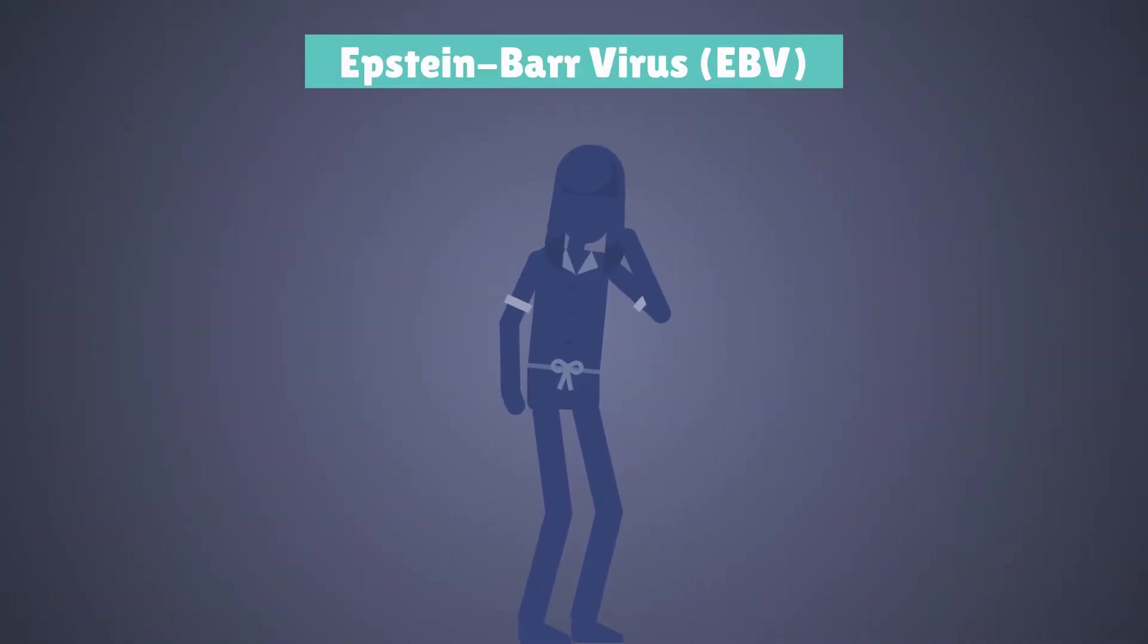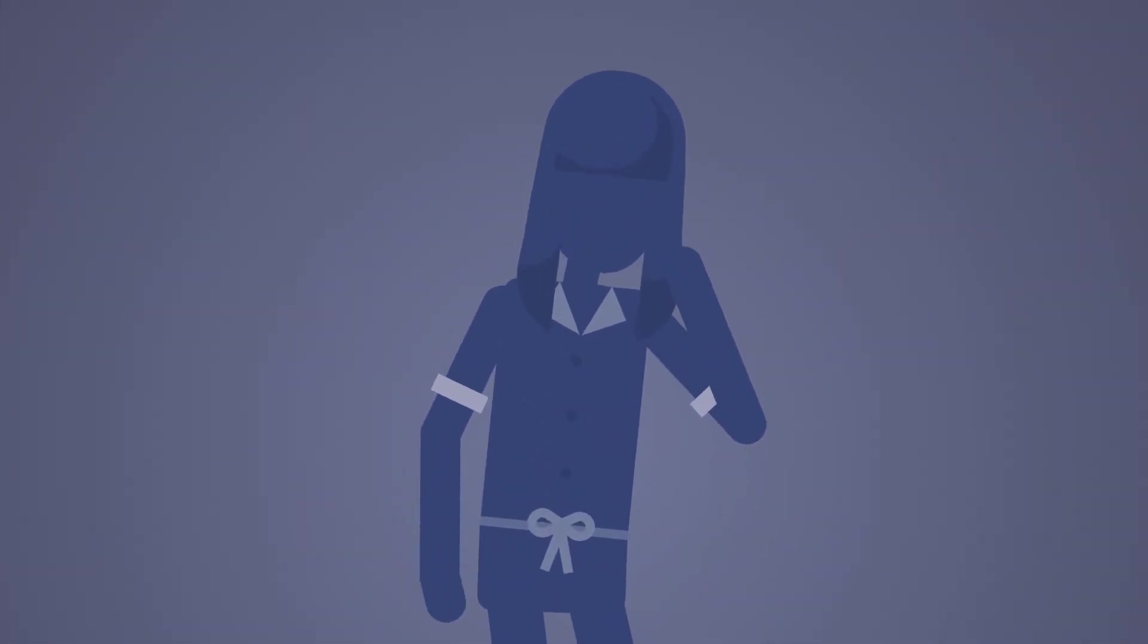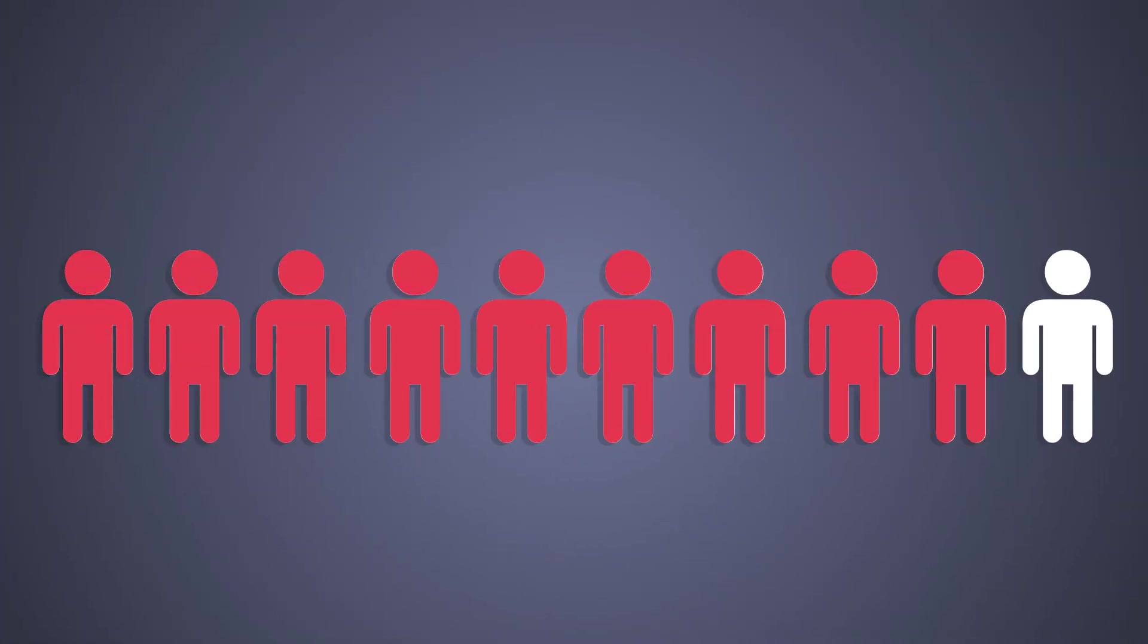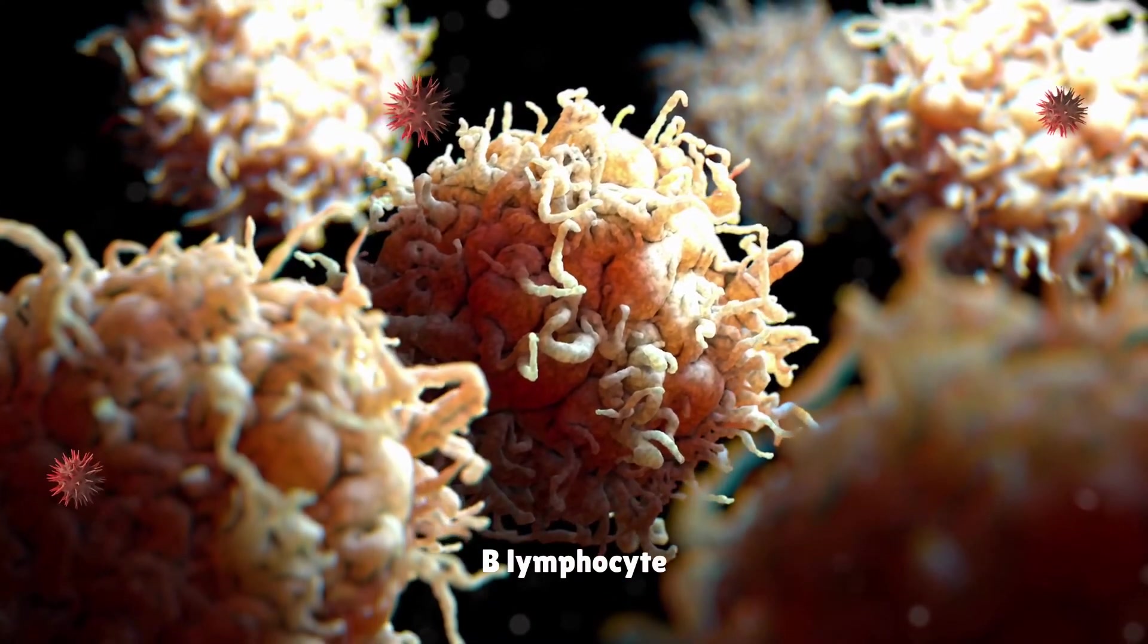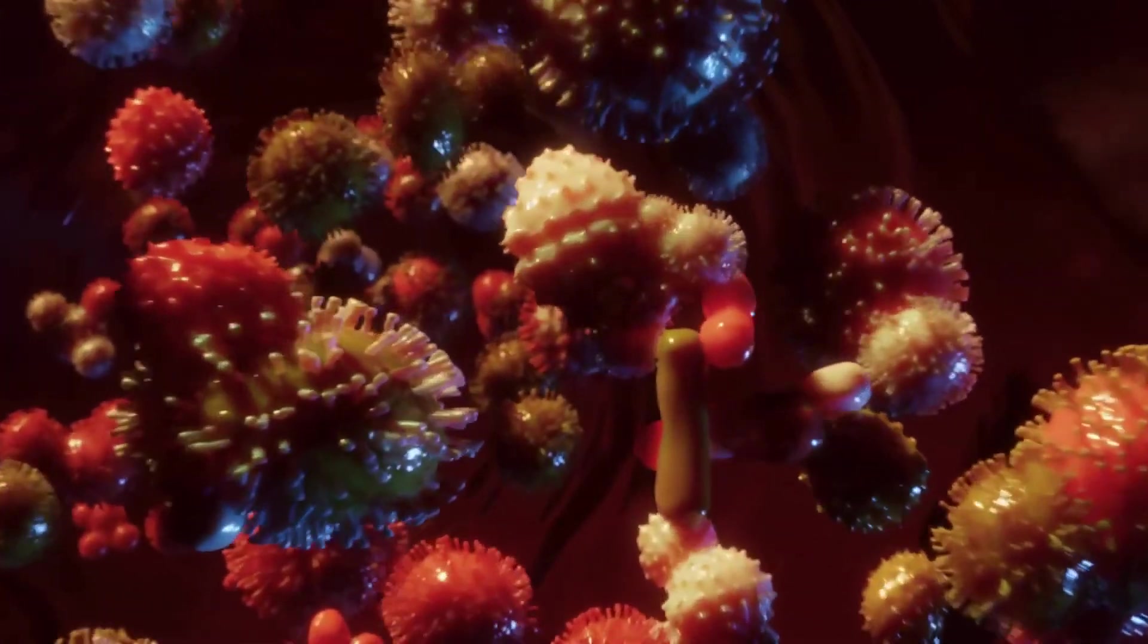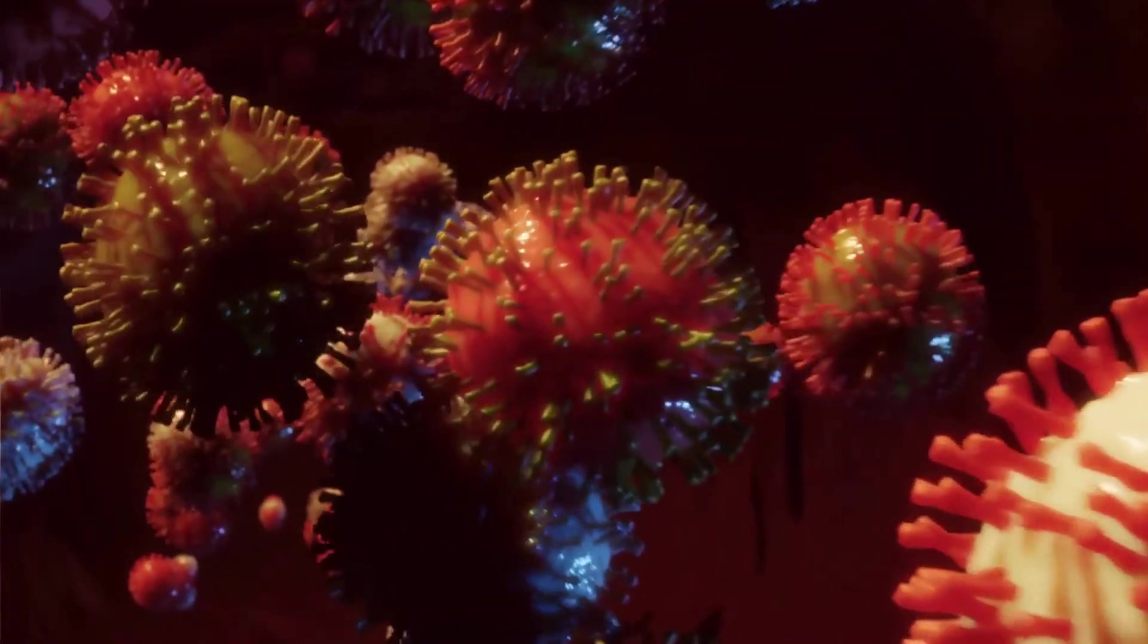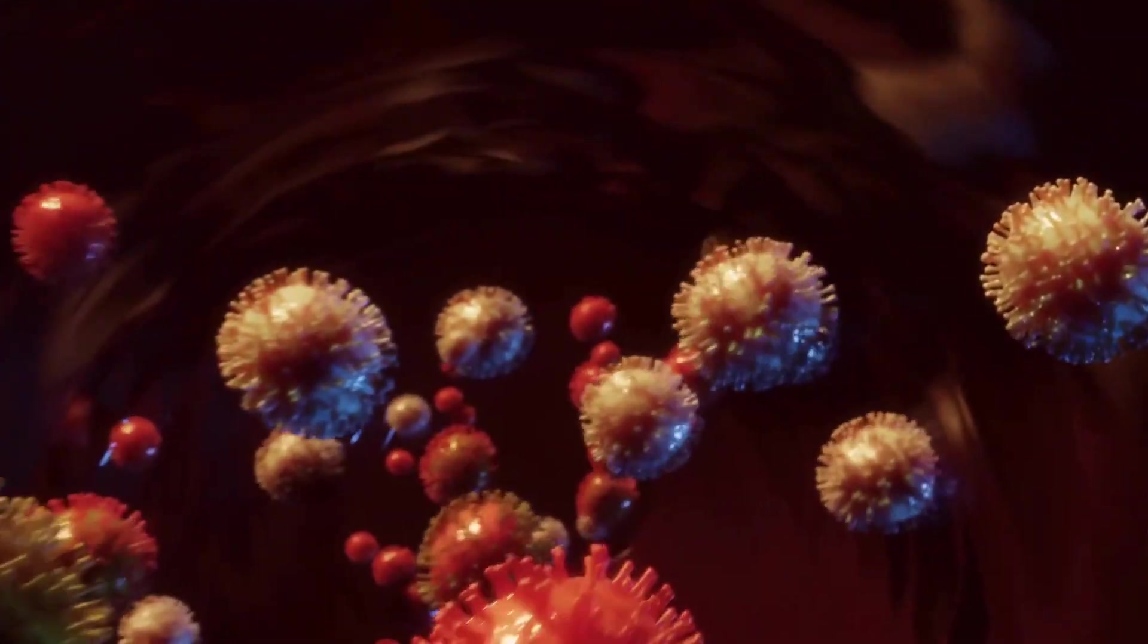EBV can be passed on from person to person through saliva, by coughing, sneezing or by sharing utensils. EBV is a very common virus with more than 9 out of 10 people being infected worldwide. Once it infects, it stays in certain white blood cells in their body called B lymphocytes. It can interfere with the cells causing them to grow and divide out of control. EBV infection increases the person's risk of getting nasopharyngeal cancer and certain types of fast-growing lymphoma such as Burkitt's and Hodgkin's lymphoma.